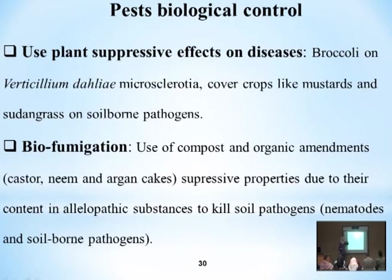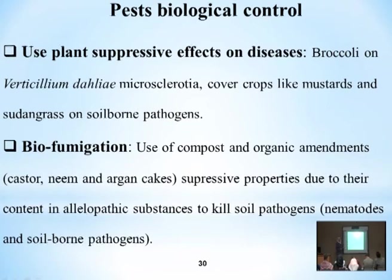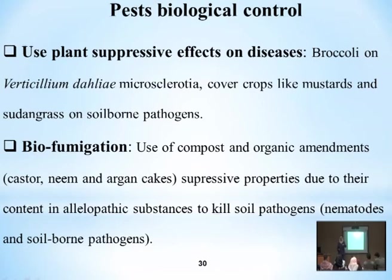Soil-borne pathogens include Verticillium, Rhizoctonia, and Phytophthora — diseases that cause vascular wilt or damping-off of seedlings. Previously, methyl bromide fumigation was used, but now plant-based materials are being used that have the capacity to inhibit growth of weeds, insects, or nematodes — derived from castor, neem, and orange cake.